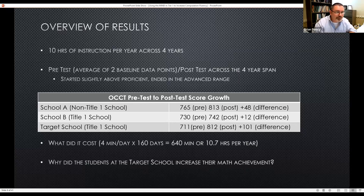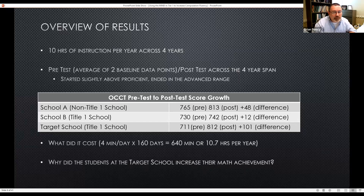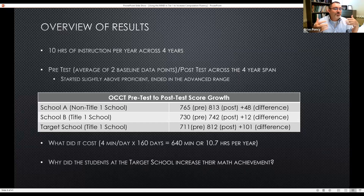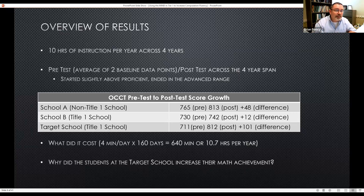Why did the students at the target school increase their math achievement? In my opinion, we simply decreased the instructional mismatch between grade level skills and what the kids were coming in with. Because we gave them those tool skills and foundational skills, the teachers didn't change how they taught over four years — they used the same curriculum. The kids' prior knowledge changed. That basically allowed and empowered teachers to be more effective, because they were focused on teaching procedures and concepts. But when students didn't have the prerequisite skills to engage in those aspects of the instructional environment, they just lost a lot of effect.